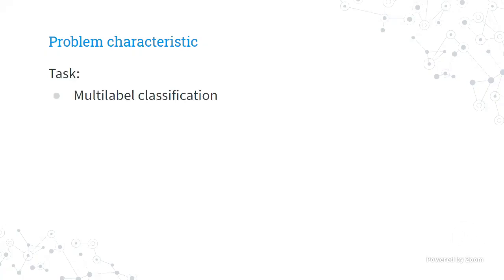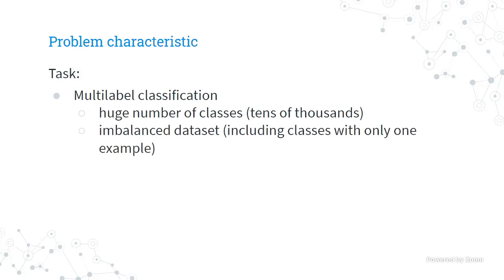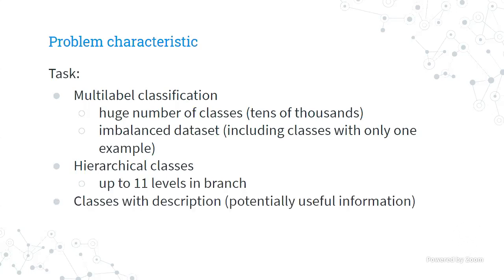Our task was multi-label classification, because a patent can belong to many classes. There were huge numbers of classes — tens of thousands — and a big problem was that the dataset was really imbalanced: some classes occurred only once, others a few times, while others occurred thousands of times. The classes are hierarchical with a tree structure; some branches had a depth of 11, and each class had a description that could be potentially useful information.